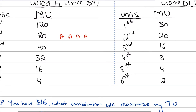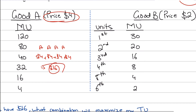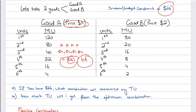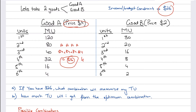Since good A costs four dollars, spending four dollars on each of four units of A uses up all 16 dollars. So following this logic, all four units purchased would be of good A. However, this is not the right way to do it — even though on the face of it the marginal utility of A appears greater than the marginal utility of B, there is a technical problem with this comparison.